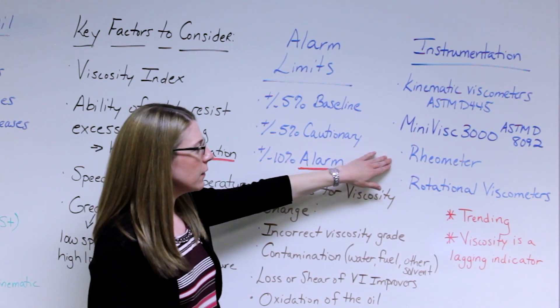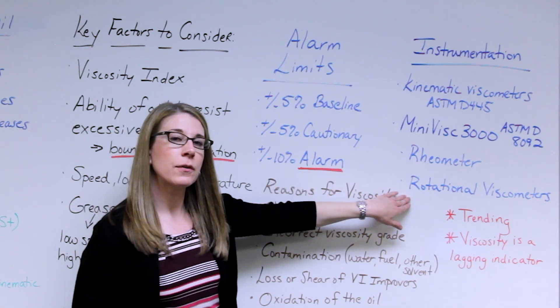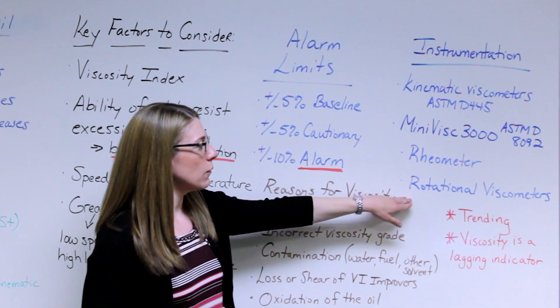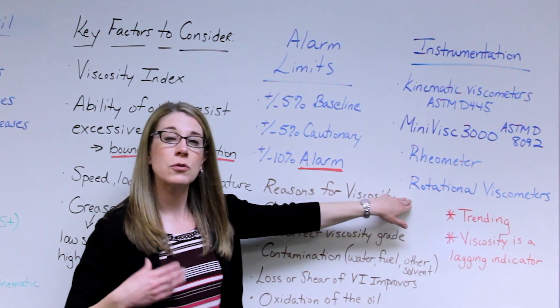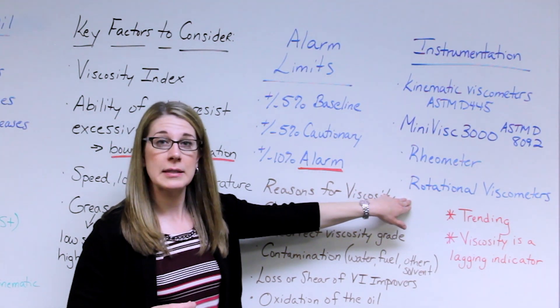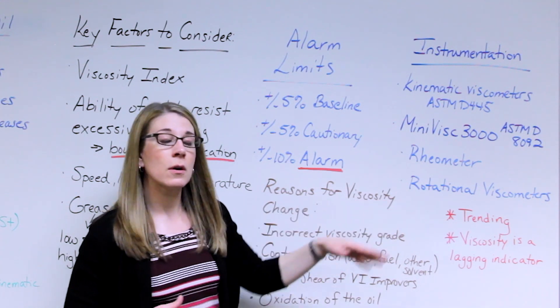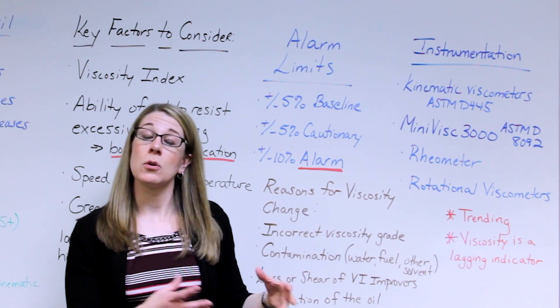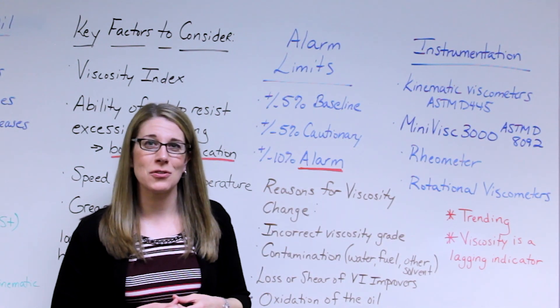There's also rheometer techniques and rotational viscometers. Just note though if a rotational viscometer is being used those results are going to be typically reported out in centipoise. So just make sure that you do the proper conversions if you do indeed need those results in centistokes.